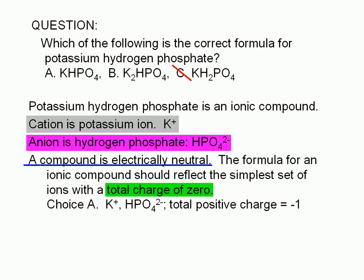Choice A would imply a total charge of negative 1. The formula for choice A implies a formula unit consisting of one cation, which has a charge of plus 1, and one anion, which has a charge of negative 2. Positive 1 plus a negative 2 equals a negative 1. So choice A must be wrong.